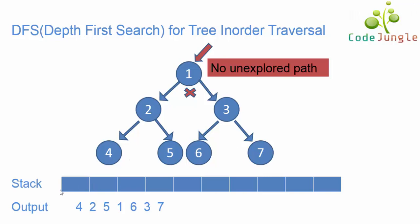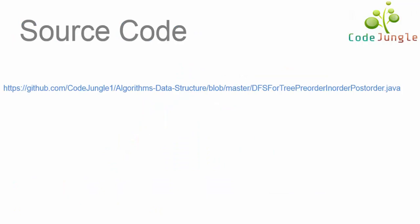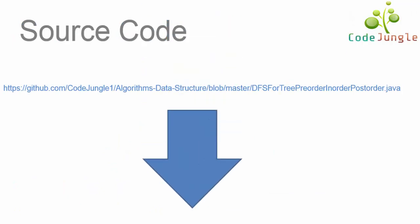We have now completed the traversal. All elements are popped out of the stack, hence the algorithm stops. There are no more unexplored paths in this tree, and that is how we traverse a tree using the DFS algorithm with in-order traversal. That's all for this video. The link for the source code is given in the description box below. If you liked the video, don't forget to hit the like button, and do comment, share, and subscribe to the channel. Thanks for watching.